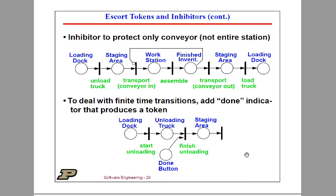Now, what if we wanted to protect only the conveyor and not the entire workstation? That's what an inhibitor node can do. This is a similar situation, but all we want to do is prevent using the conveyor at the same time in both directions. A unidirectional conveyor just can't go both ways at the same time.